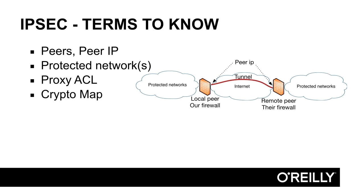In the coming videos in this chapter, we will look at how to configure the cryptomap. When the VPN tunnel is set up, it is done in two different phases. First is phase one, and after that, phase two. If phase one fails to be set up, there will be no setup of phase two — they come after each other. Phase one is sometimes called ISAKMP or IKE. IKE is a protocol used to set up the first phase, the initial phase of the VPN tunnel, and the IKE phase is sometimes also called the ISAKMP phase.